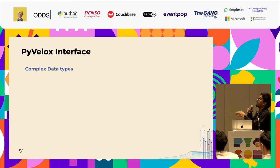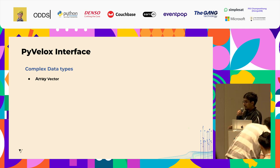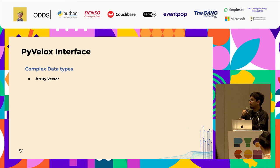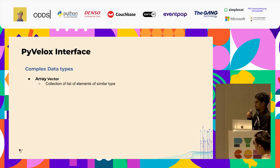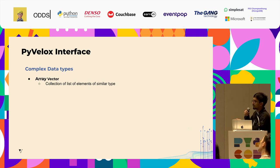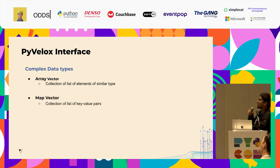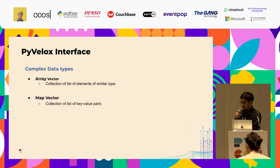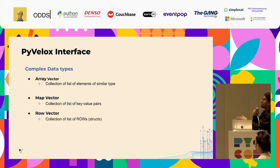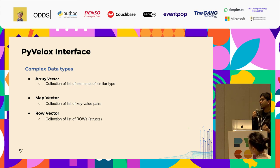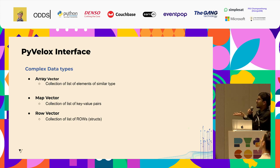To clarify what complex data types mean: an integer vector means a column in your table with integer type. But if you want a column with list values, an array vector is used — it's a collection of list elements of similar type. Map vectors are a collection of key-value pairs. A row vector is a collection of rows and can be used to encompass a complete table, data frame, or even a single column made out of structs.